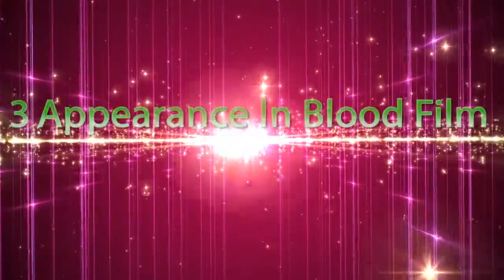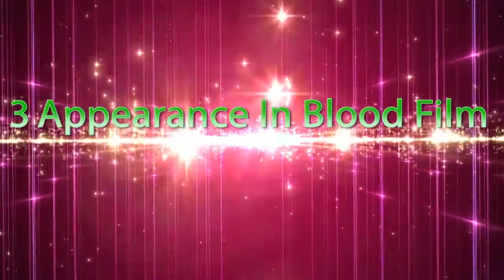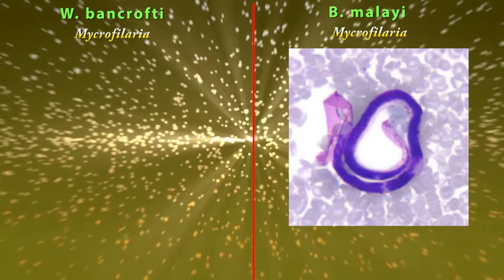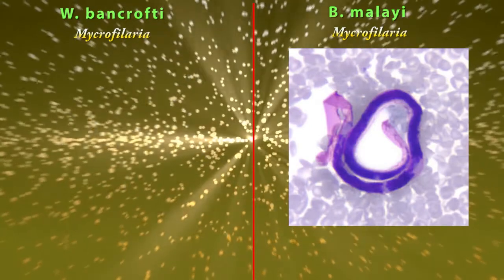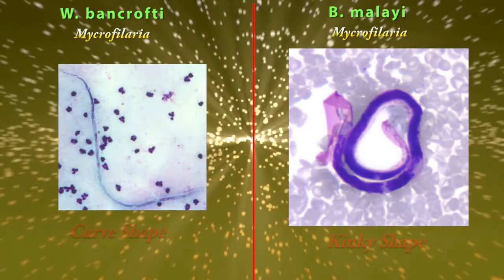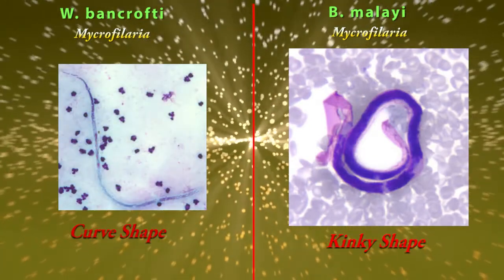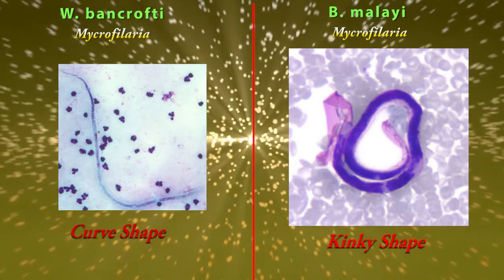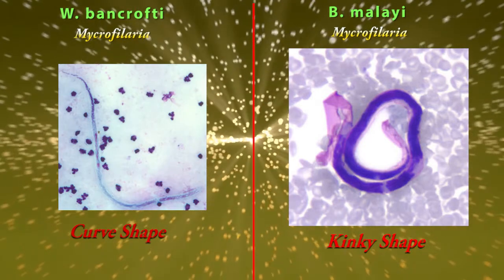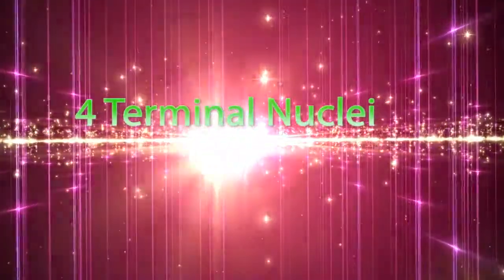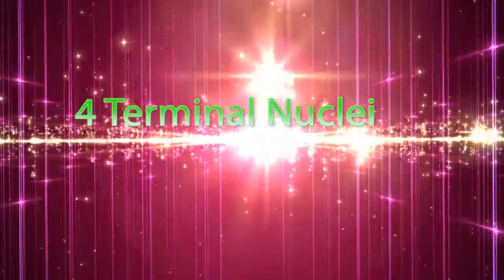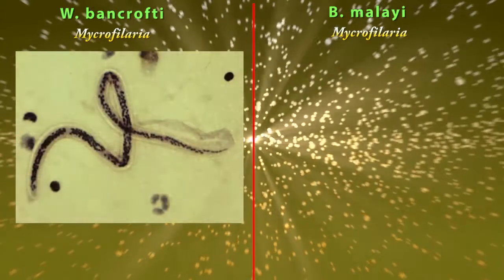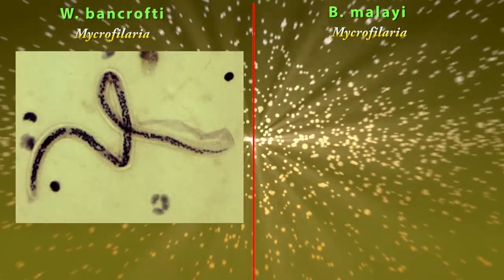Difference number three: appearance in blood film. When we observe the slide, we can see Brugia malayi in a kinky shape, and Wuchereria bancrofti appears in a smoothly curved shape.